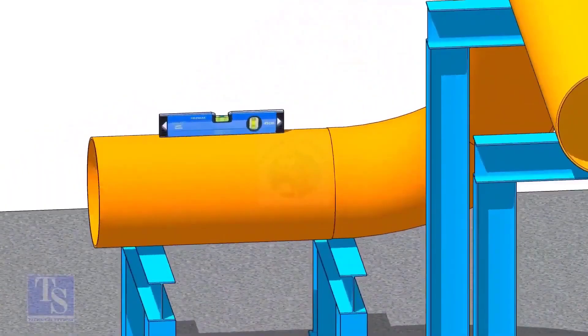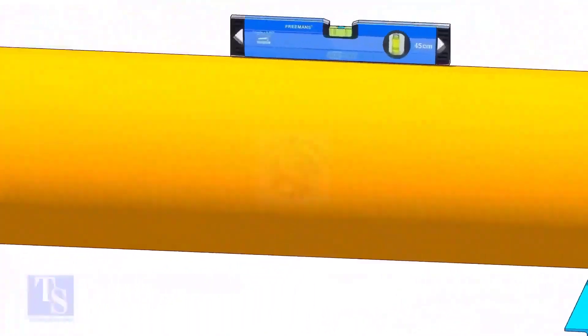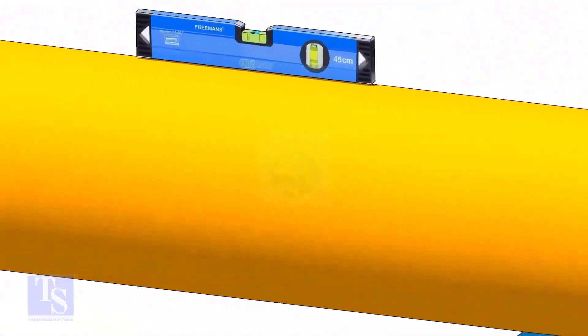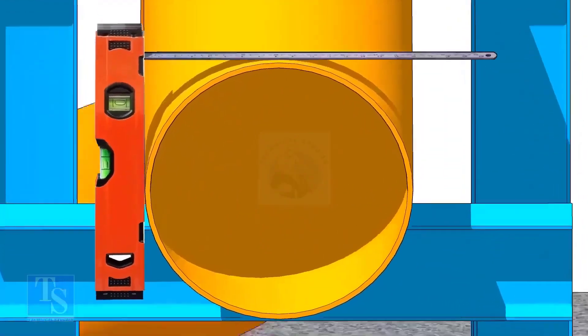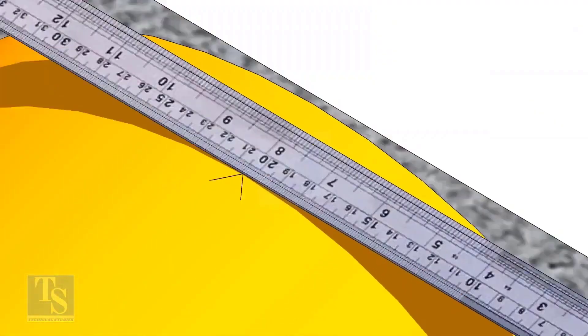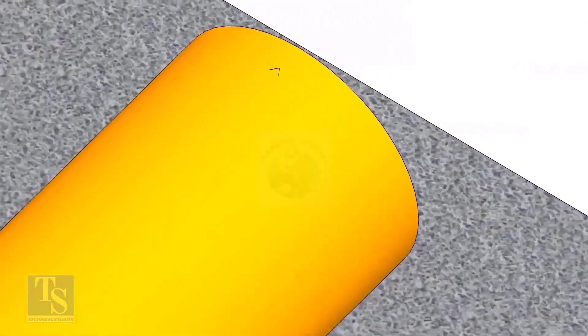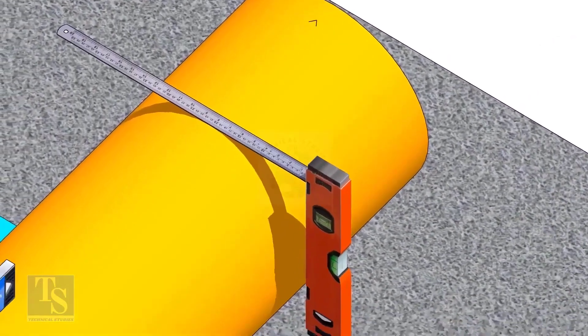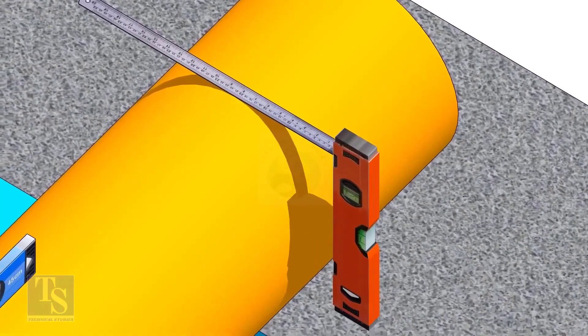After leveling the pipe, mark the center line. Don't forget to punch mark this line. Mark half OD at 300mm apart. This pipe OD is 406mm, so mark 203mm from the vertical level bottle on the top of the pipe. And draw a line connecting these marks.